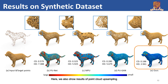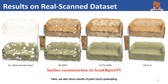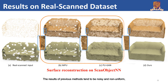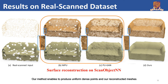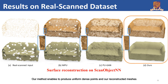Here, we also show results of point cloud upsampling and the corresponding mesh reconstruction results on the real scanned dataset. The results of previous methods tend to be noisy and non-uniform, thus leading to low-quality reconstructed meshes. Our method enables producing uniform dense points, and our reconstructed meshes can well describe the geometric structures with smooth and complete surfaces.